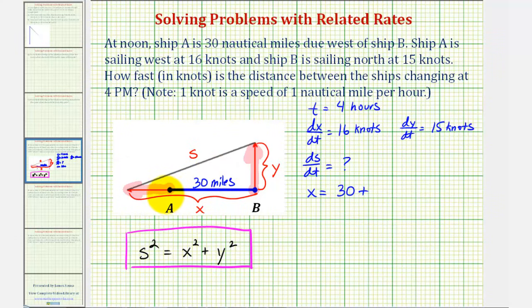And because dX/dt equals 16 knots, this length would be 30 plus 16 knots times the time of four hours, which is equal to 94 miles.